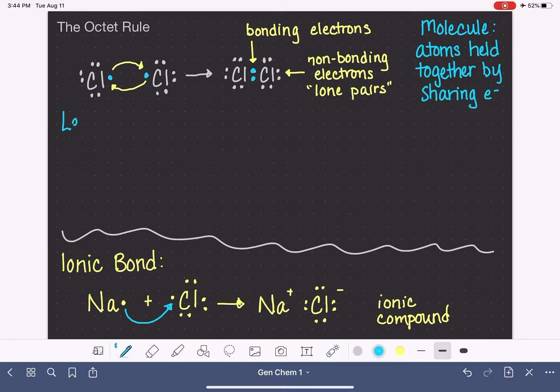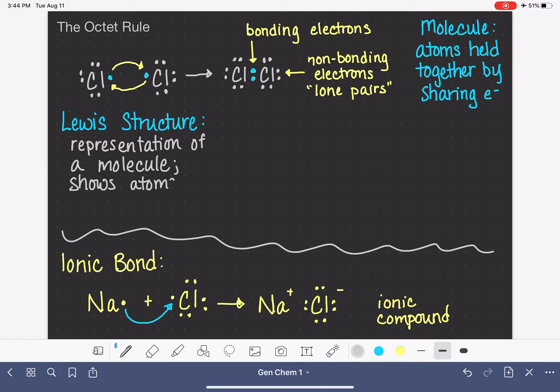The Lewis structure, not Lewis dot symbol, but Lewis structure. The Lewis structure is a representation of a molecule. Just like the Lewis dot symbol is a representation of an atom, the Lewis structure is a representation of a molecule. And the Lewis structure shows the atoms that are in the molecule. It shows the lone pairs. And it shows the bonds, or bonding electrons.